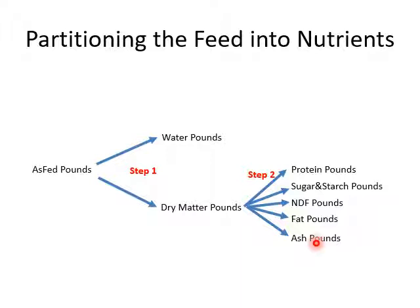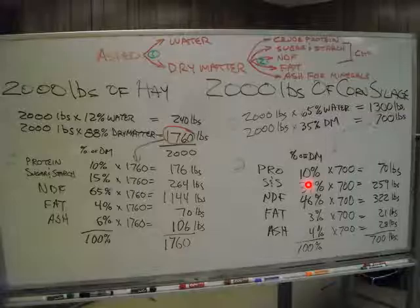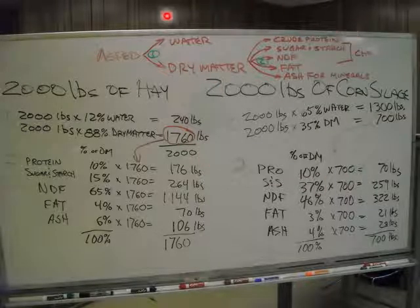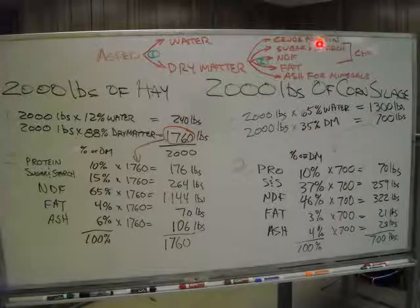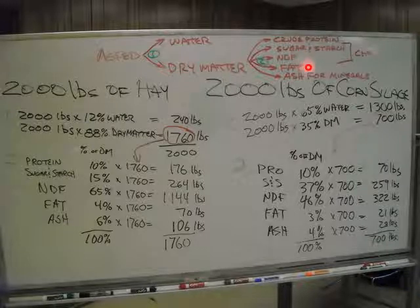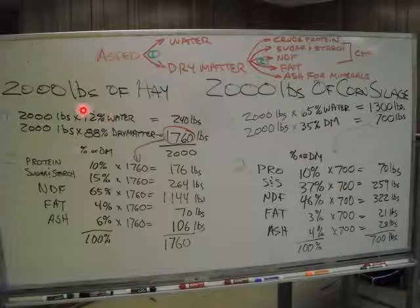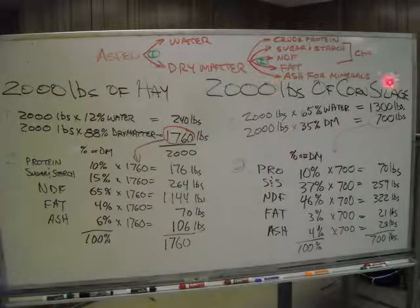So how might we do two examples? At the top of the whiteboard we have our as-fed amount. Step one: we split it into water and dry matter. Step two: we split it up into crude protein, our two carbohydrate fractions, fat, and ash as minerals. We'll take one ton of hay and one ton of corn silage.